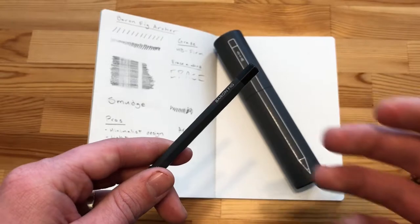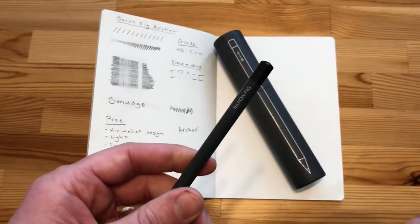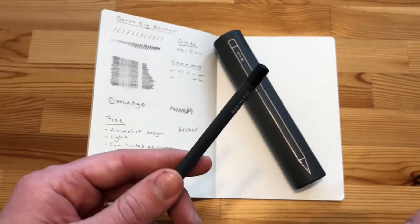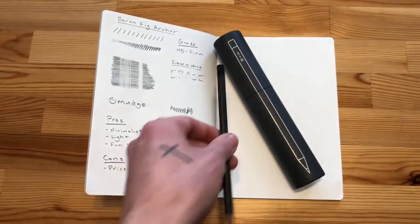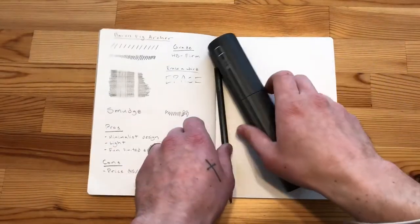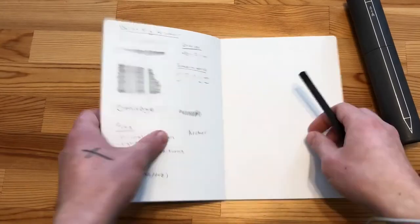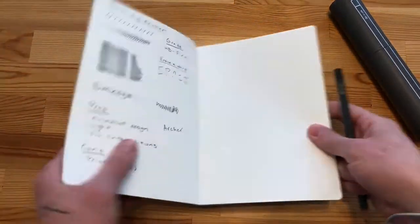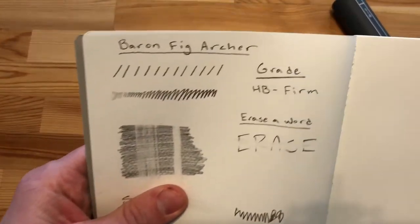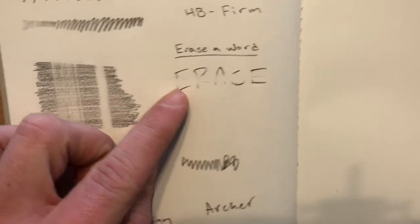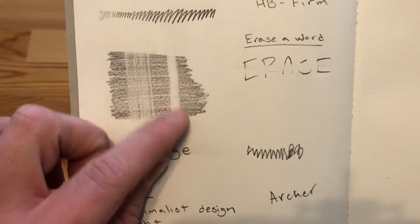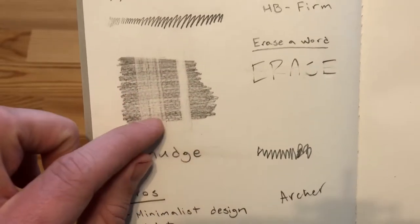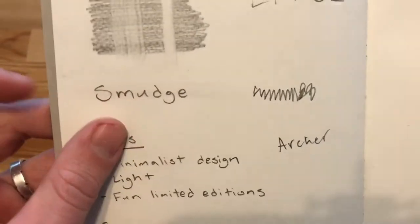Go ahead and keep swiping to see some of the more specific notes and thoughts I have on the Baron Fig Archer pencil. I've compiled a couple of tests here on the Baron Fig Archer. I'm doing this on a Baron Fig Vanguard. Just a couple of tests erasing a word - you can see it erases fairly well. This is a couple of back and forth on some shading. This is just one pull down smudge test. Holds its lead pretty well on paper.